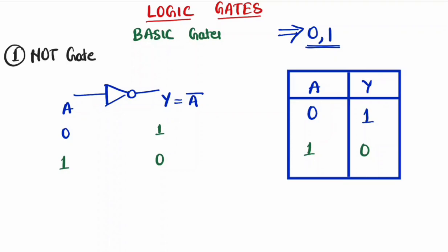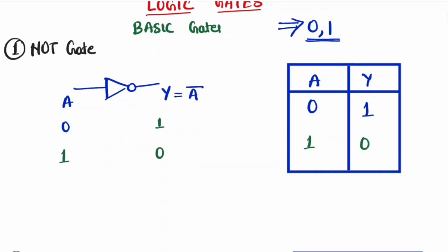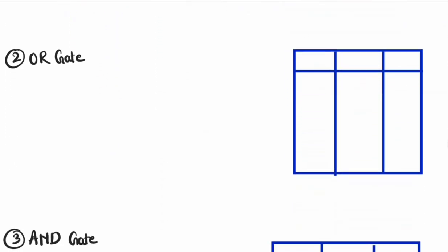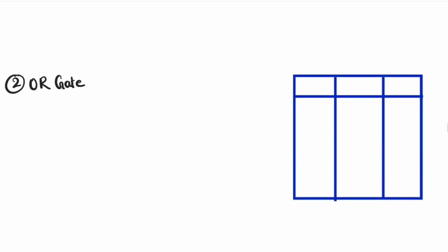The second type of gate we'll discuss is the OR gate. The OR gate is a logic gate that has two or more inputs and produces one output. This is the symbol of the OR gate — it has two inputs, A and B, and produces output Y.